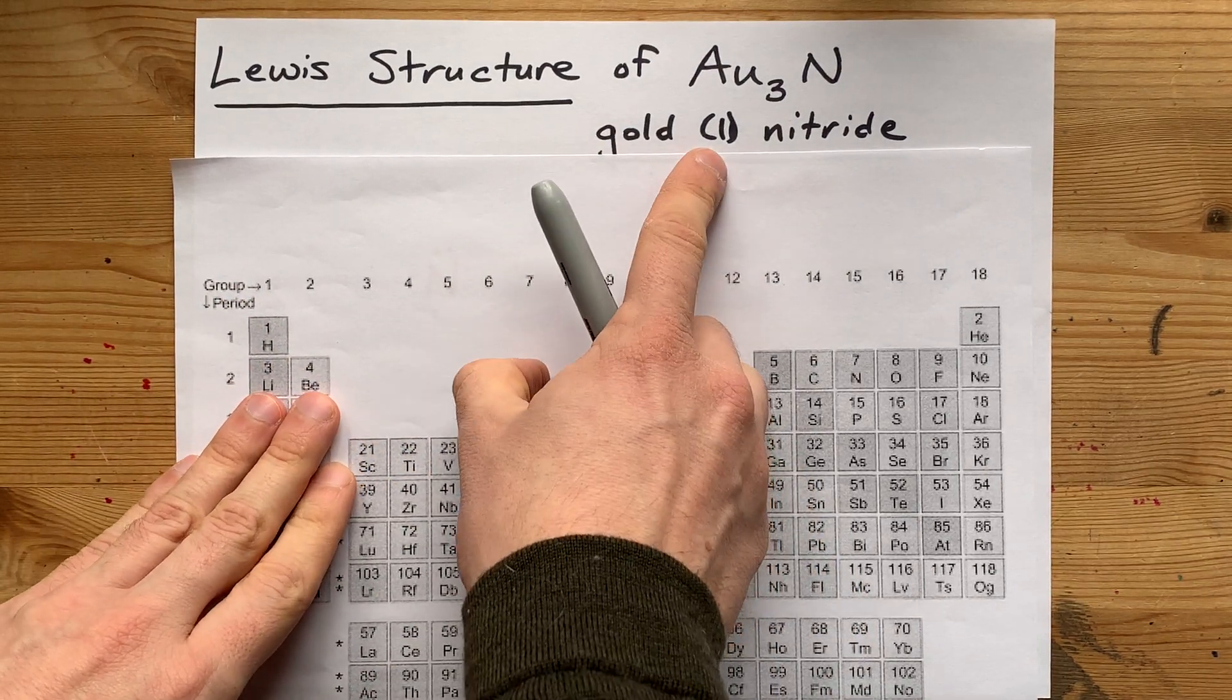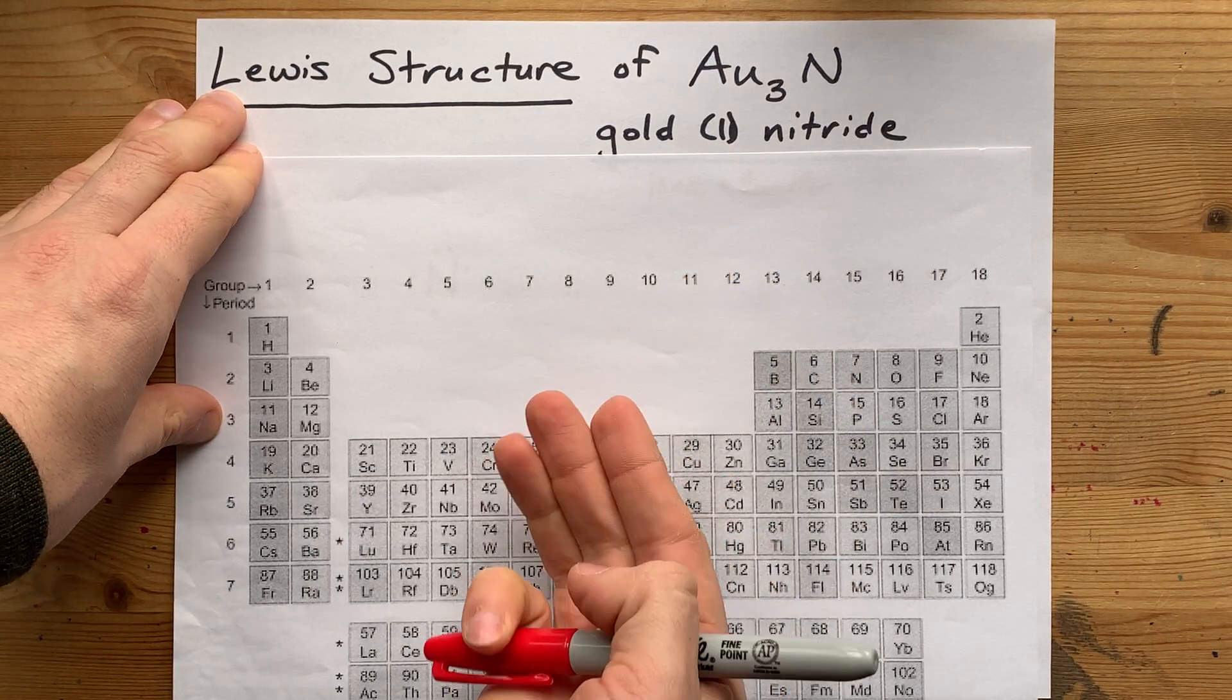give each of these atoms whatever charge it ends up with in the chemical, that many valence electrons. Here, gold has a charge of positive one. So I want you to give gold one valence electron.